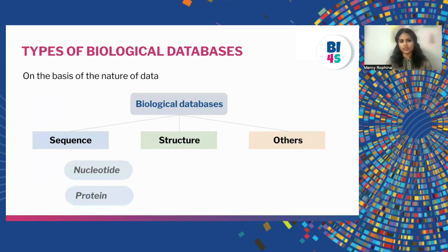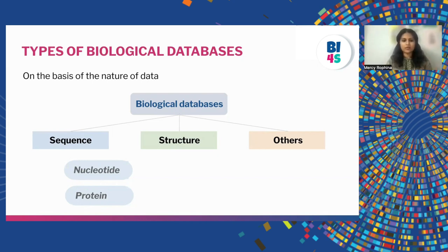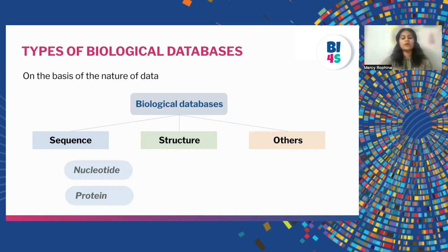There is yet another classification of biological databases, done on the basis of the nature of data — what kind of data is stored. The biological databases can be categorized into three major types: sequence databases, structure databases, and others. A sequence database contains sequence information — this can be a protein sequence or a nucleotide sequence. A structural database contains all structure-related information, like protein structures. These are the major classifications of biological databases.